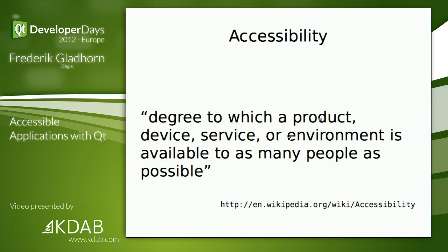Let's start with a definition of accessibility. This is just a quote from Wikipedia: the degree to which a product, device, service, or environment is available to as many people as possible. It is a very fuzzy term — it just means making it possible that people can use your software. There are many aspects to accessibility, and I won't make it less fuzzy; I'll just show some different areas where you need to pay attention.